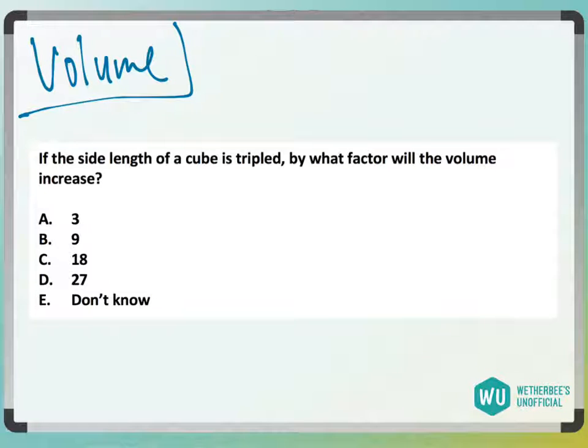So the volume of a cube - the side length is all the same for a cube, so the volume is side cubed because every side length is the same. It's basically a square in 3D.